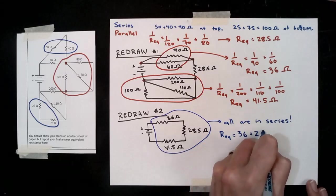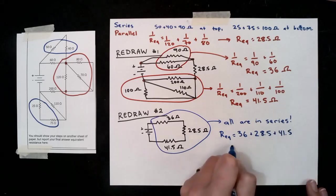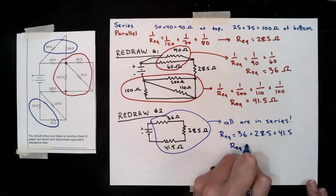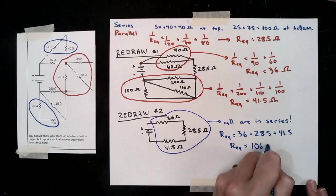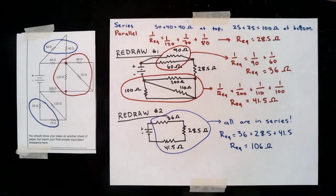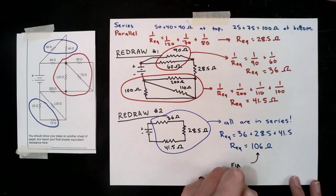We have 36 plus 28.5 plus 41.5, and that is our final answer. We would be able to be done and turn in our work and be finished. What I do want to make sure we understand is that is acting as an equivalent resistor as well.